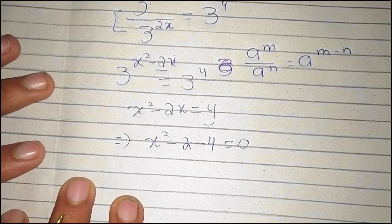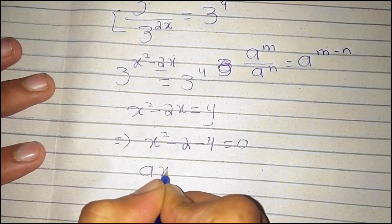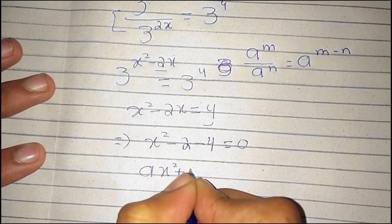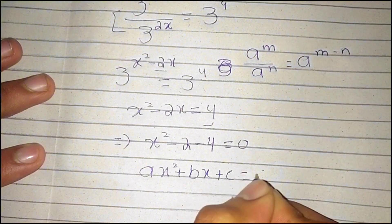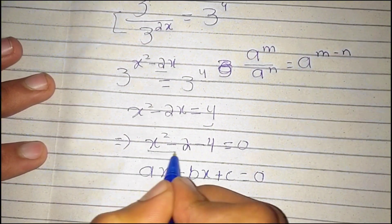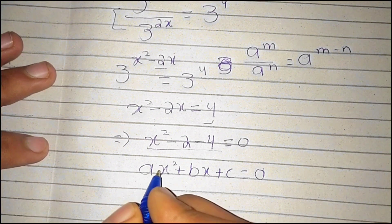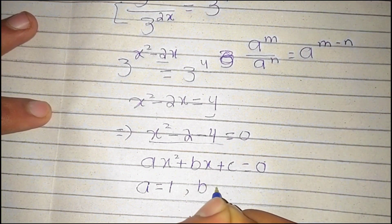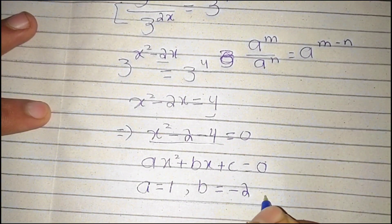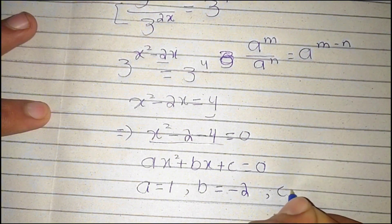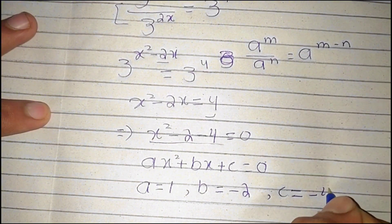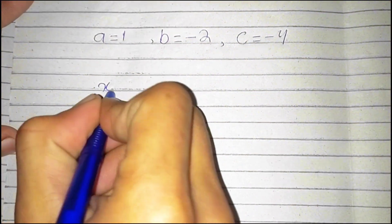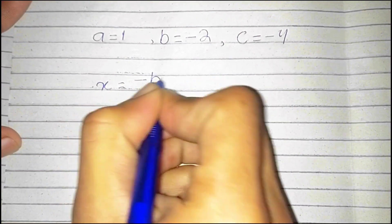The standard form of the quadratic equation is ax squared plus bx plus c is equal to 0. Comparing our equation to this standard form, we have a equal to 1, b equal to minus 2, and c equal to minus 4.